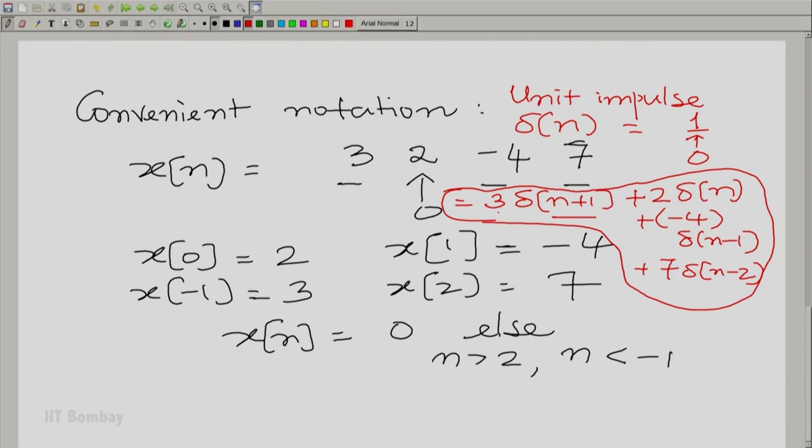This sequence x n is very easily seen to be 3 times delta n plus 1. Delta n plus 1 means the unit impulse shifted backward by one step plus 2 times delta n plus minus 4 times delta n minus 1 plus 7 times delta n minus 2. This is a simple example which tells you how you could associate a combination of appropriately weighted impulses with any sequence. Here I have illustrated this for a finite length sequence, but you can do this forever.